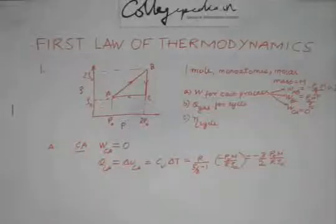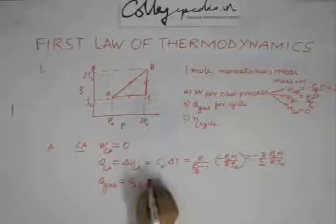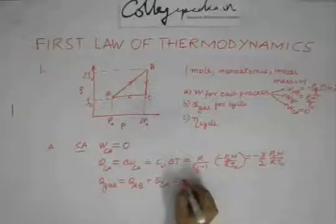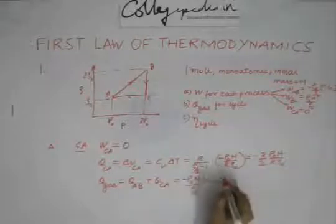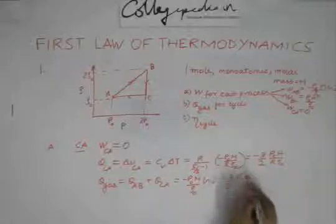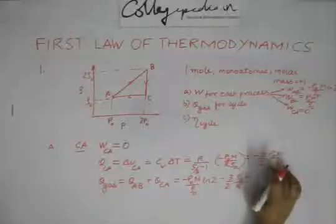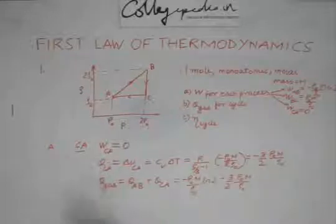Now because we have all the W's and all the Q's, we can determine what is the Q rejected by the gas. The gas rejects heat in the process AB and in the process CA. So Q rejected is QAB and QCA because in the process BC the gas was given heat. This R is going to cancel, so we will be left with R0 only.